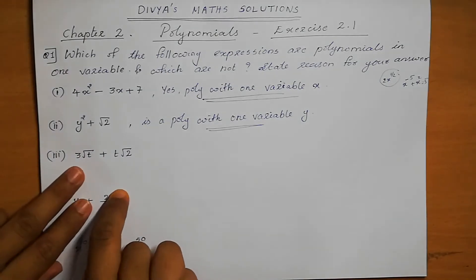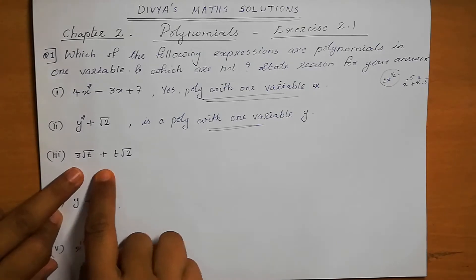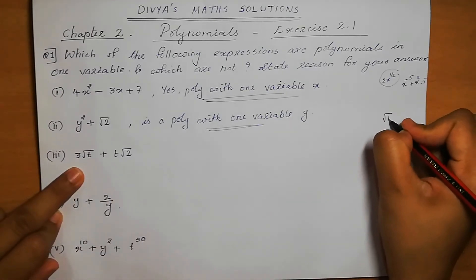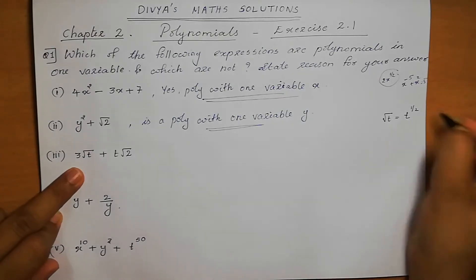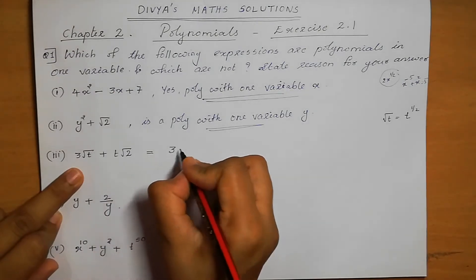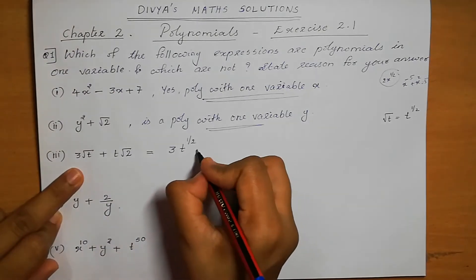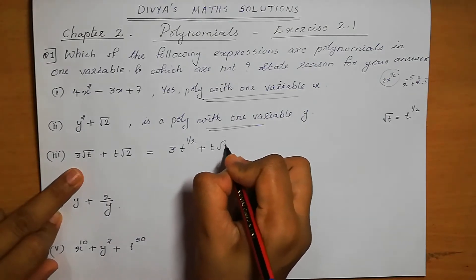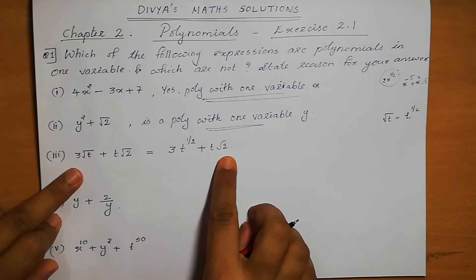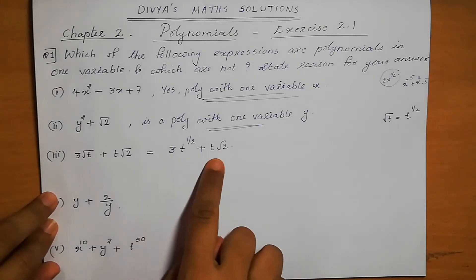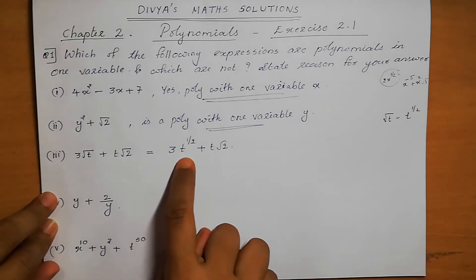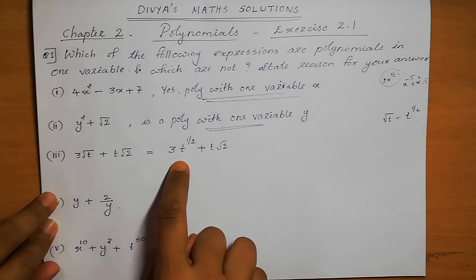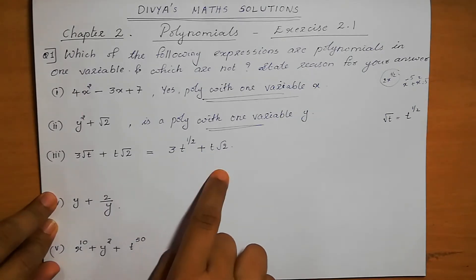Next: 3 root t plus t root 2. Root t means square root of t, which we can write as t power 1/2. So this equation becomes 3t power 1/2 plus t root 2. There is only one variable, t, but this is not a polynomial because the power of the variable is a fraction, not a whole number.